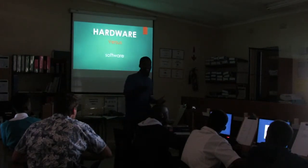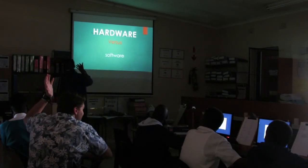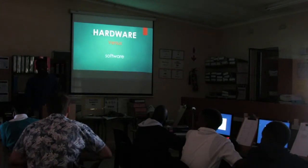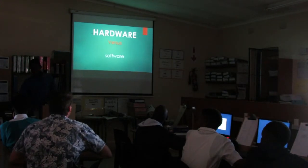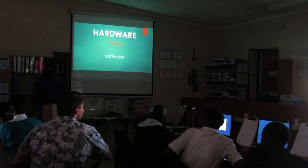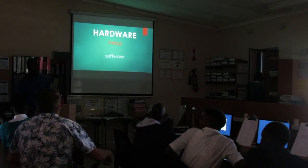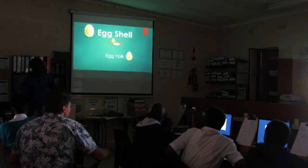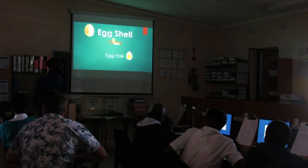Anyone know the difference between hardware and software? Take a wild guess — it's in the word. Etienne: software is the things inside the computer box, and hardware is like the screen or mouse. Actually, software is like the programs on the computer, the things you can't see. And hardware is the computer itself, the mouse, the screen.